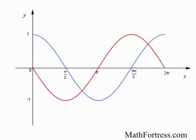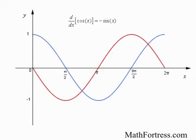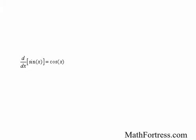It's hard to see at first, but the red graph is actually an inverted sine curve. So it turns out that the derivative of cosine is actually the negative of sine. Now that we know the derivative of sine and cosine, we can find the derivative of other trigonometric functions.